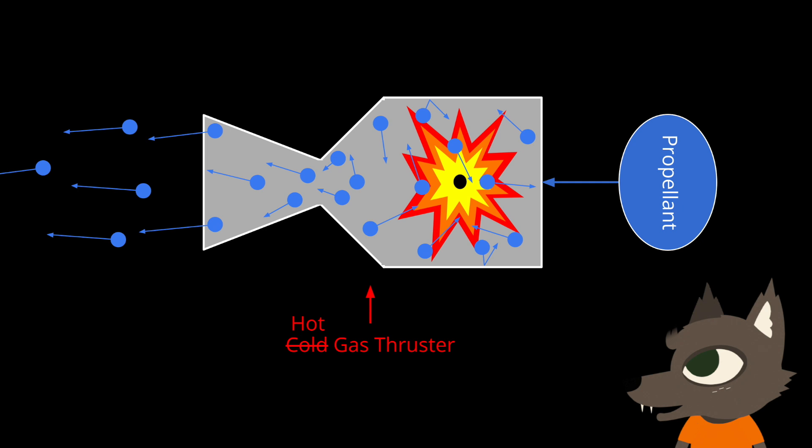Heating the gas means that the molecules will be bouncing around faster, and once the nozzle gets them moving in the same direction, they'll be moving at a higher exhaust velocity of up to around 4 kilometers per second, or around 8,000 knots in imperial.